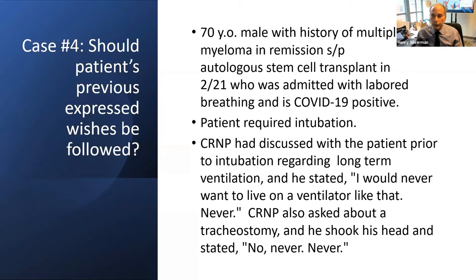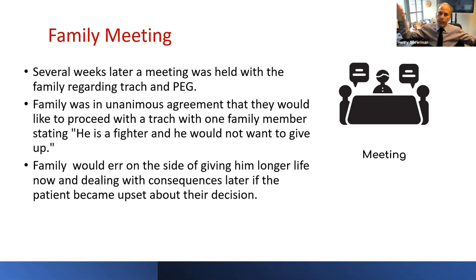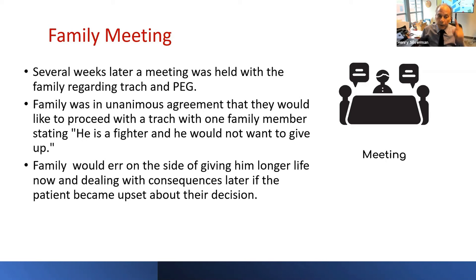The patient said no, got intubated, and has been intubated for three weeks. Now there is a family meeting regarding a trach and PEG. The family was in unanimous agreement to proceed with the trach. One family member said, 'He's a fighter and would not want to give up.' The family said they would rather err on the side of giving him longer life now and dealing with the consequences later, even if the patient became upset about their decision to put in the trach.